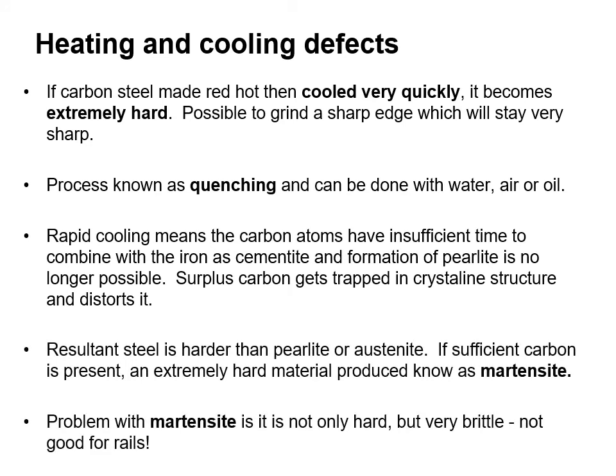If carbon steel is made red hot and then cooled very quickly, it becomes extremely hard. It's then possible to grind a very sharp edge which will stay sharp. The process is known as quenching, and it can be done with water, air or oil. Rapid cooling means the carbon atoms have insufficient time to combine with the iron as cementite, and formation of pearlite is no longer possible. Surplus carbon gets trapped in a crystalline structure and distorts it. The resultant steel is harder than pearlite or austenite.